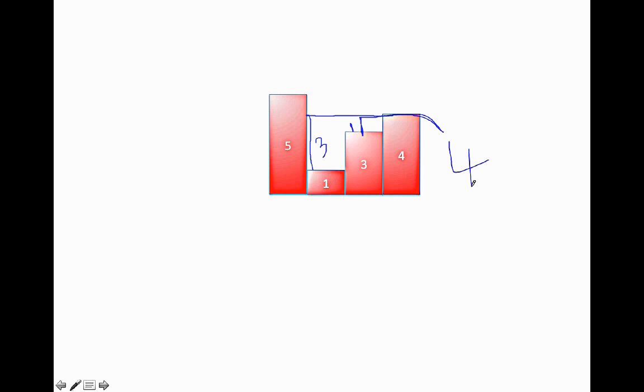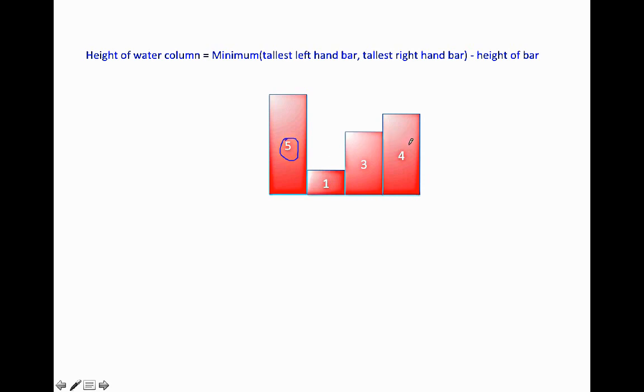Can we convert this into a formula that we could use in our algorithm? Yes. So the height of the water column above a particular bar, say above one, is the minimum of the tallest left-hand bar which is five, the tallest bar to the left of one, and the tallest bar to the right of one is four. So the minimum of five and four is four minus the height of the bar which is one. So this gives us a water column of length three. So we could use this formula to calculate the water column above every bar.